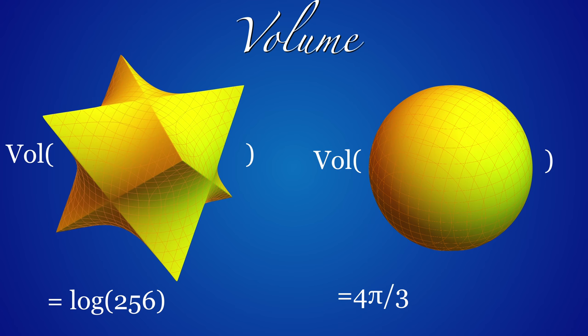But computing volumes can be tricky. The intersection of three hyperboloids with perpendicular axes leads to the shape to the left. The computation of the volume is quite tricky.